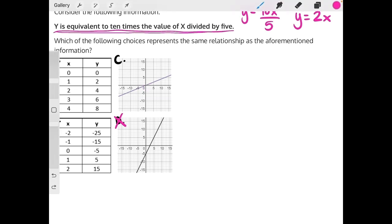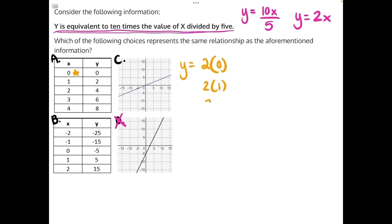For answer choices A and B, let me grab a new color. We're going to want to plug in these x values to see if we do indeed get the y values they're supposed to result in. So we'll have y is equal to 2 times x, which is 0 here. And then we'll do 2 times 1. We'll just do all of these x values.